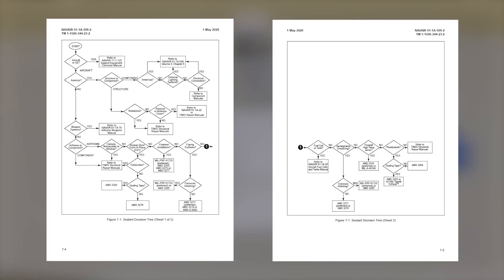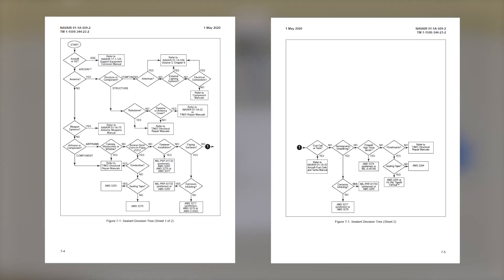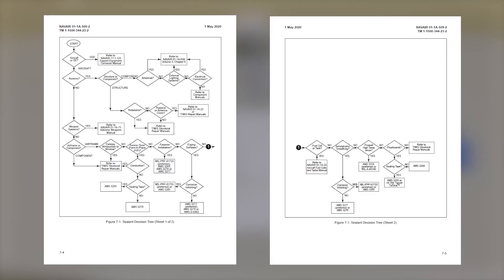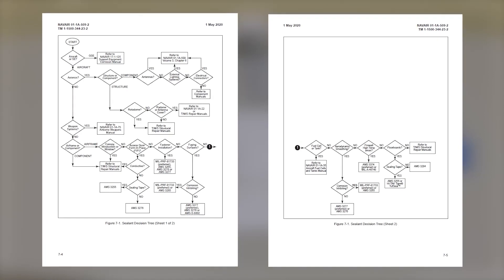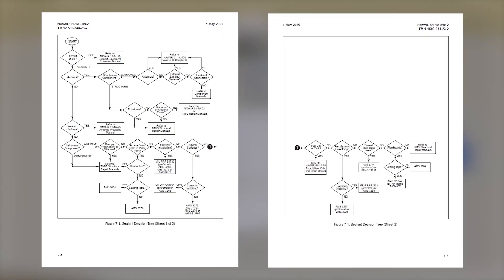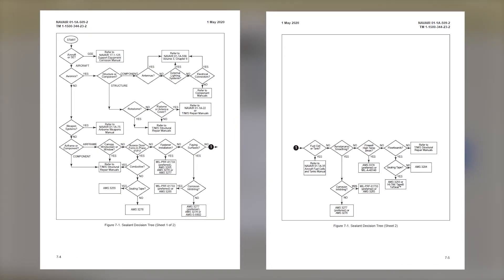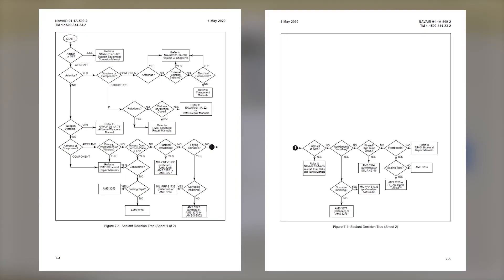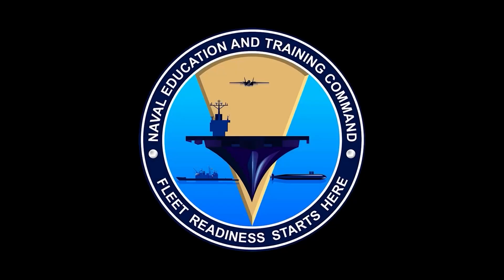Maintainers must always consult the sealant decision tree within the NAVAIR 01-1A-509, Figure 7-1. This decision tree will assist the maintainer in selecting the correct type of sealant to use, or refer them to the publication for the proper sealant required. From CNET-U Jacksonville, have a fine Navy day.